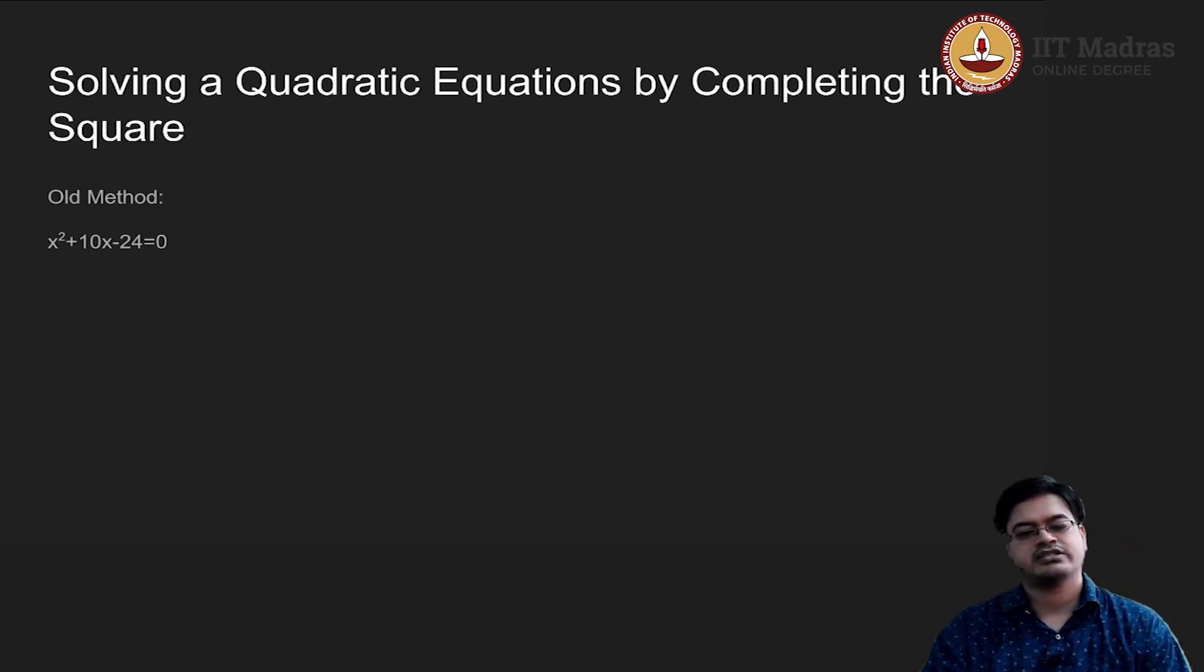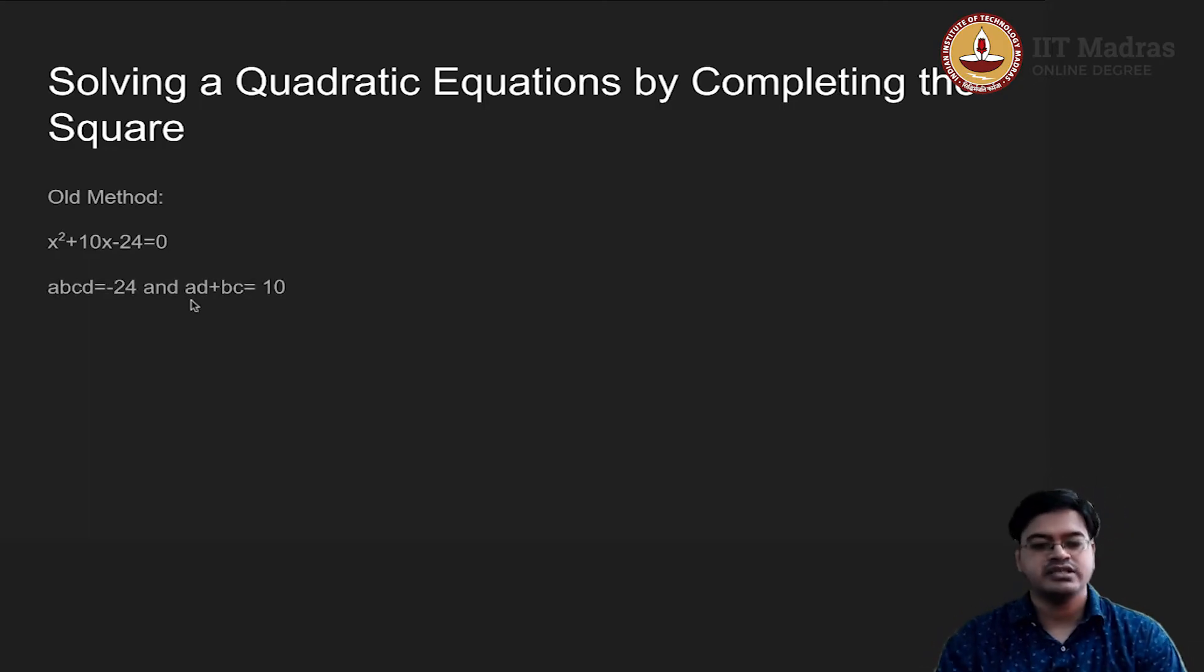Let us take this example x² + 10x - 24. If you use the method of factoring, you need to identify what is this term 24 and 1. So, 24 - 24 into 1. So, -24 is the product of the leading coefficient and the constant term and ad + bc is 10. I have this setup which is abcd is equal to 24 and ad + bc is 10.